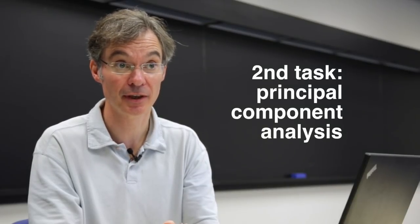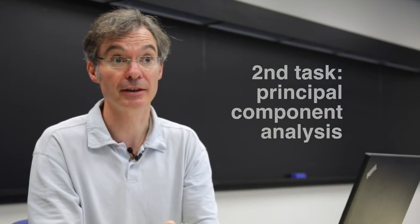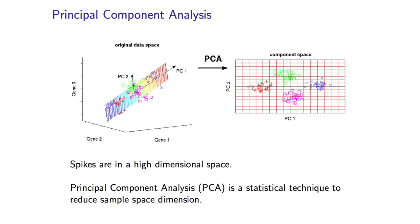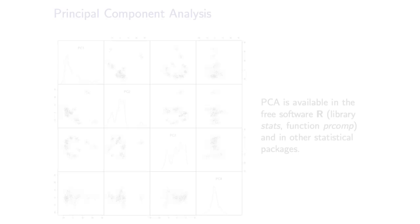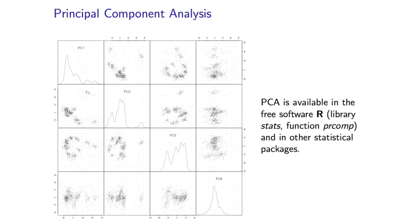That's where an automatic method like principal component analysis helps us to find interesting directions or features in a high dimensional space. Principal component analysis provides us with features that are directions in the high dimensional space in which the spikes are living at the beginning.